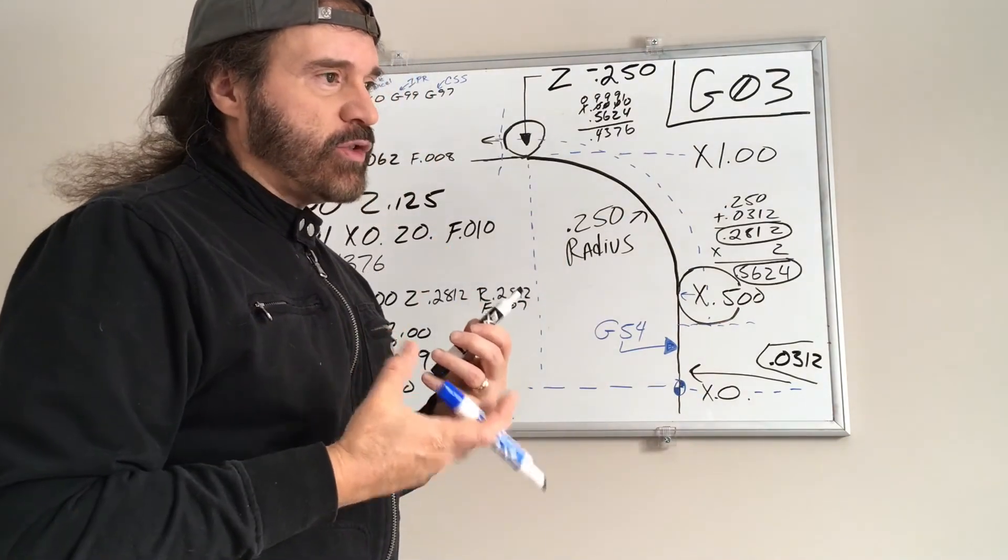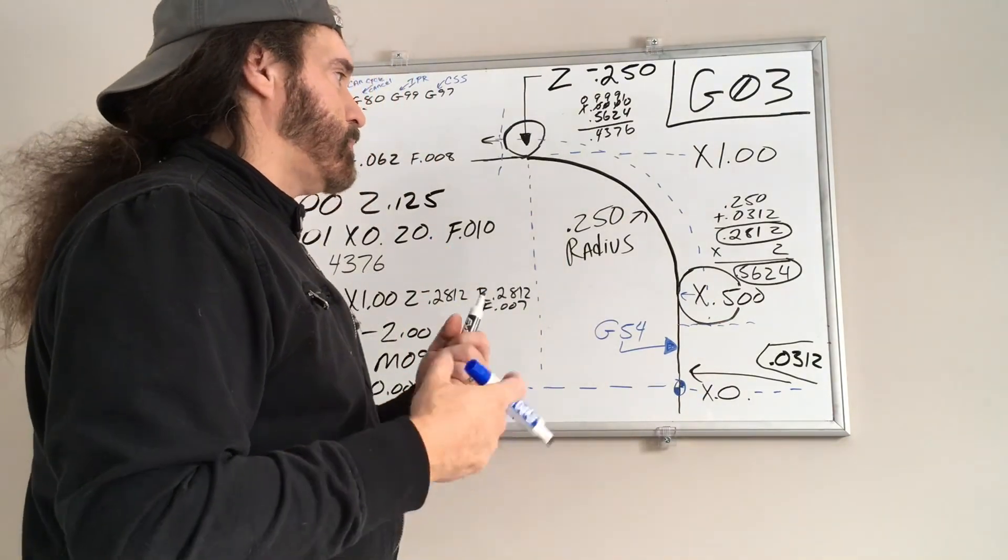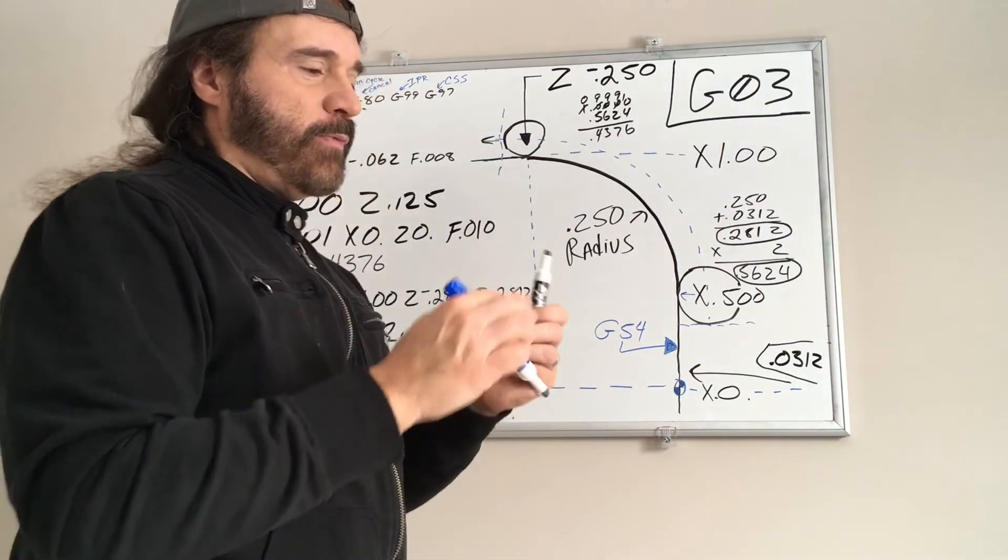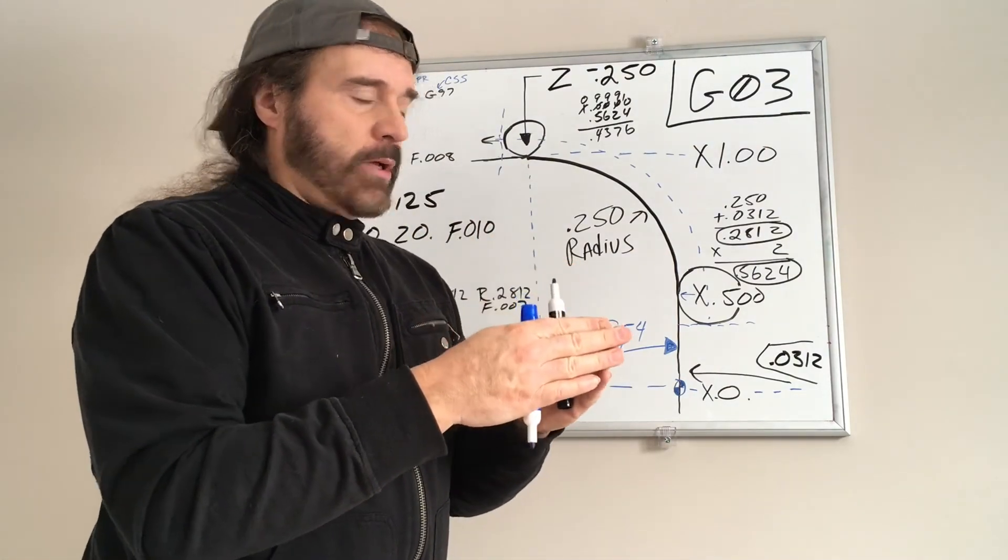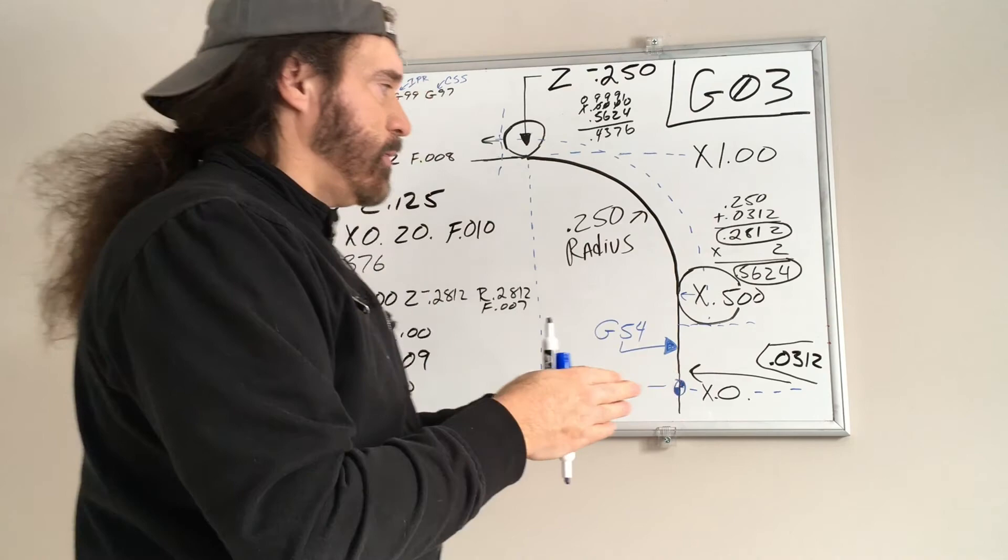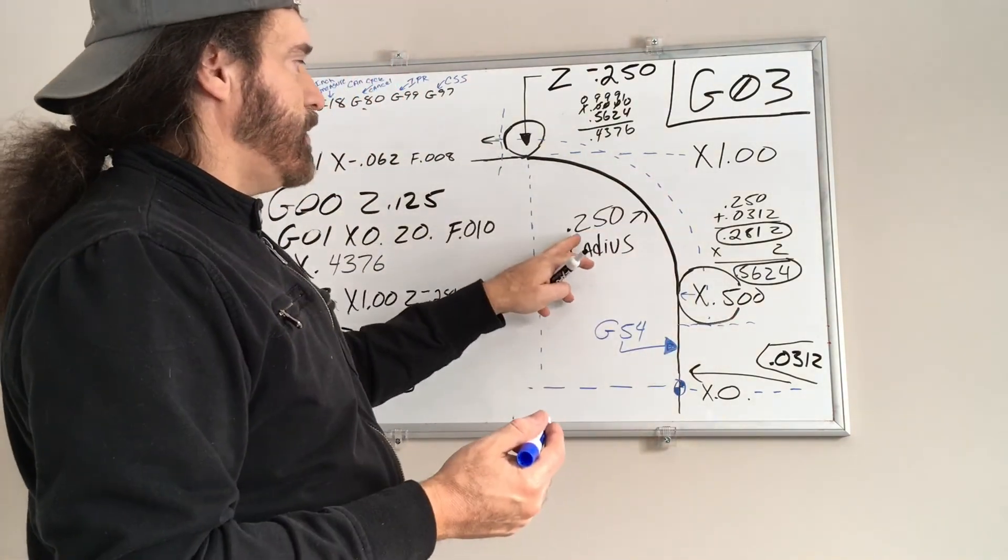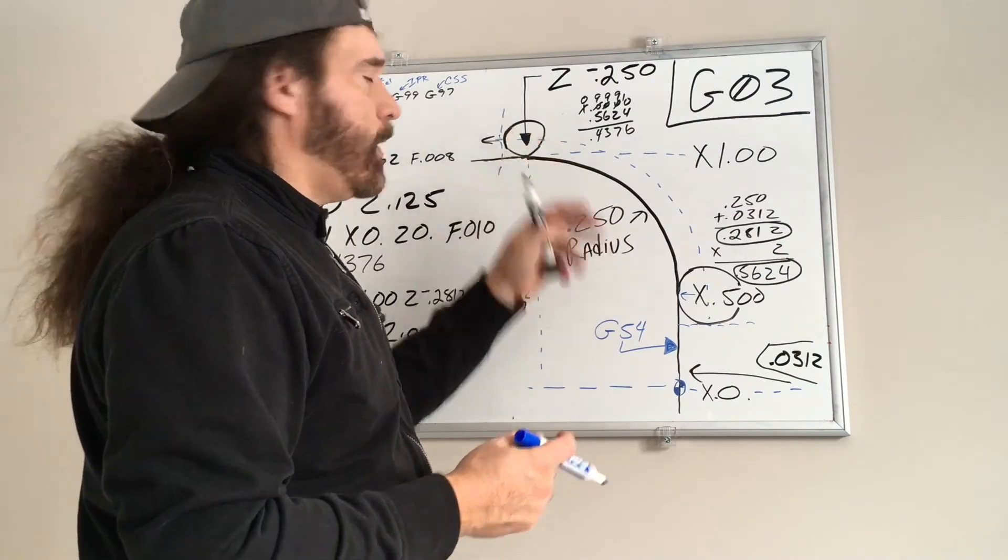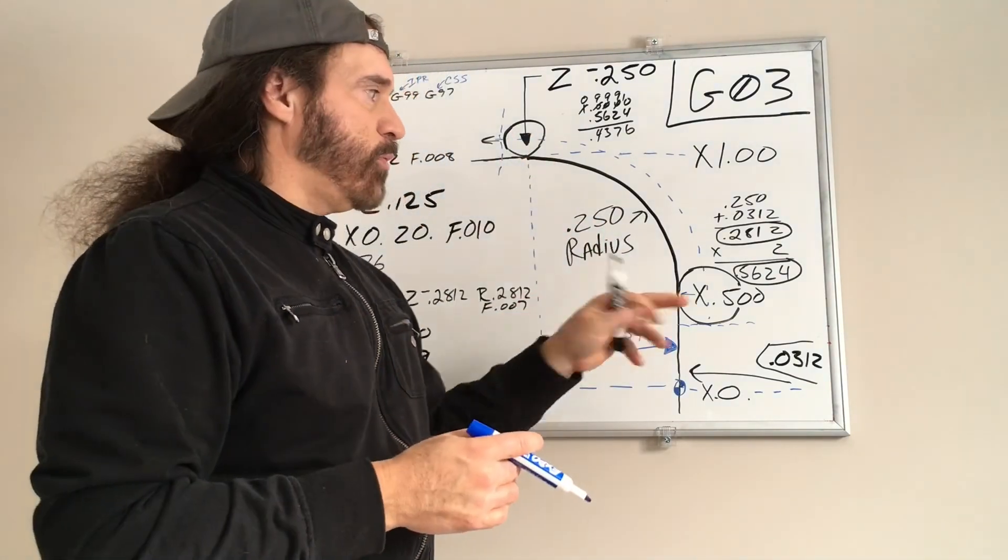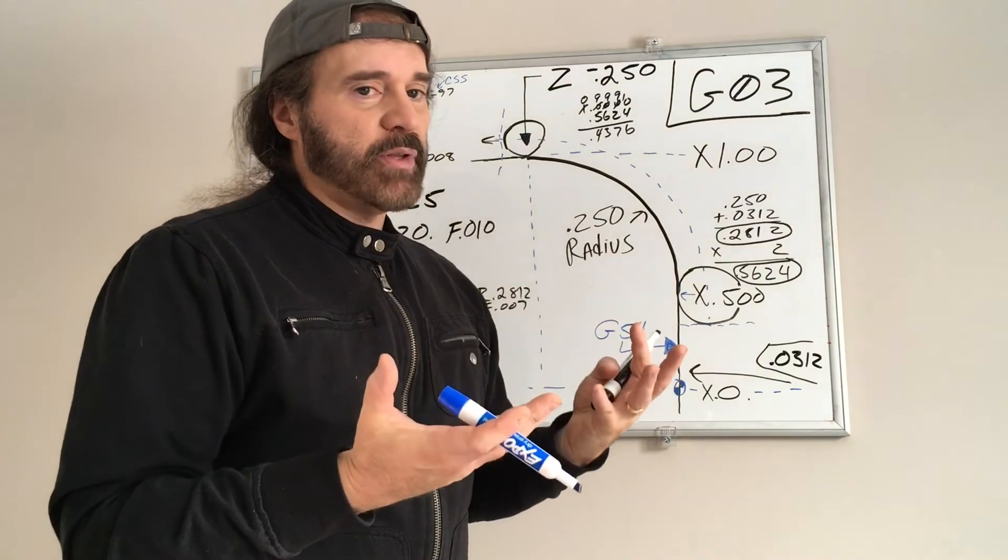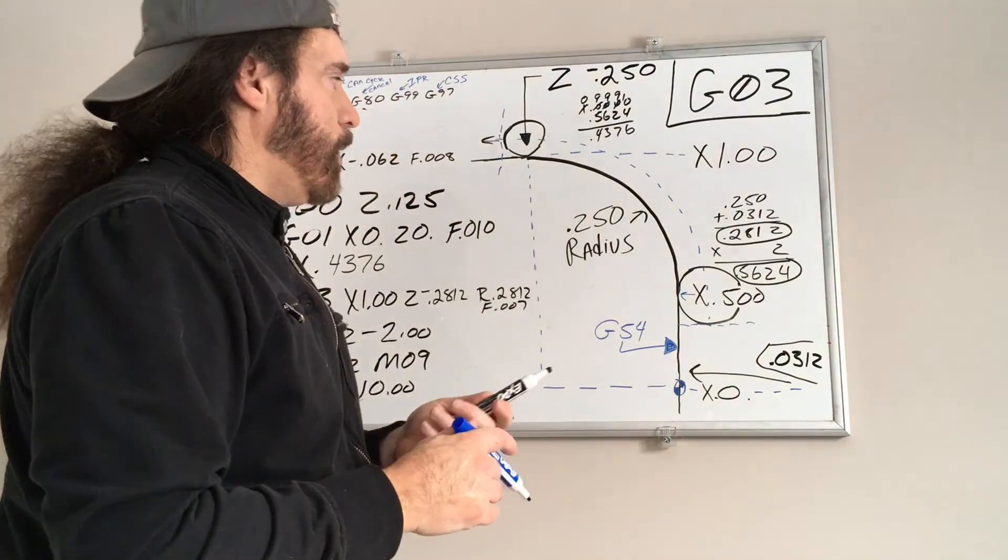So I know that sounds kind of tricky, but if you had like a real sharp point bit, you wouldn't have to do that. You can almost write essentially the X.5, the Z, yeah, Z negative 0.250, and you wouldn't have to do that. But when you're using a radius bit, you have to compensate that value.